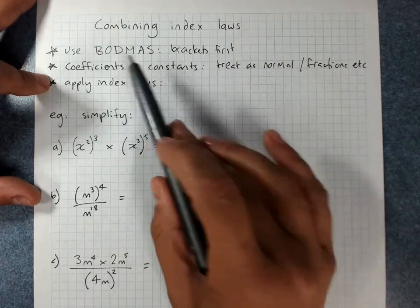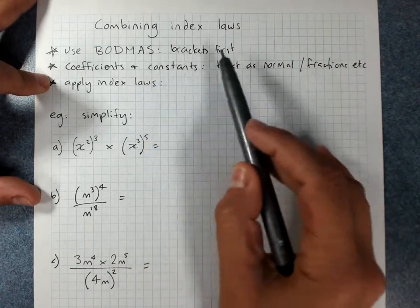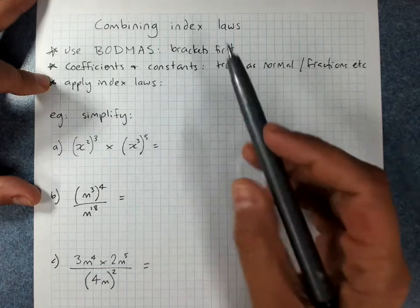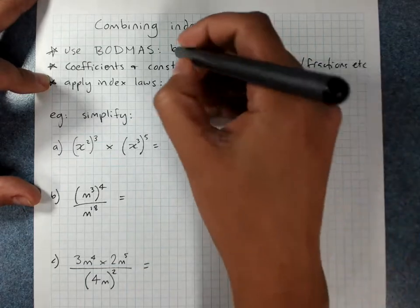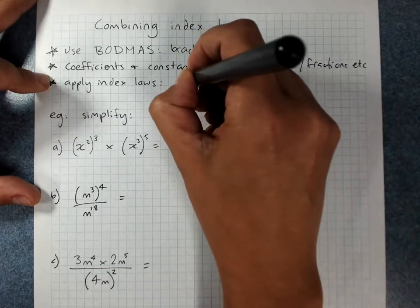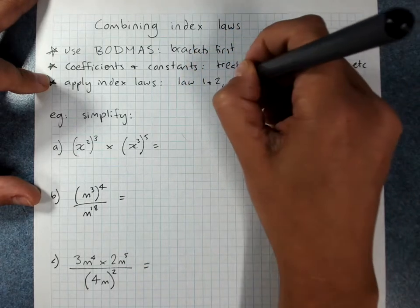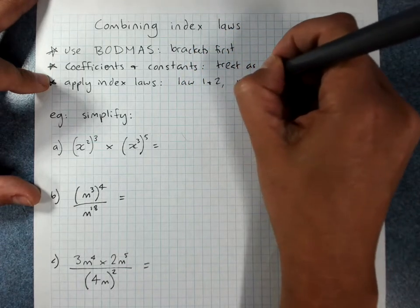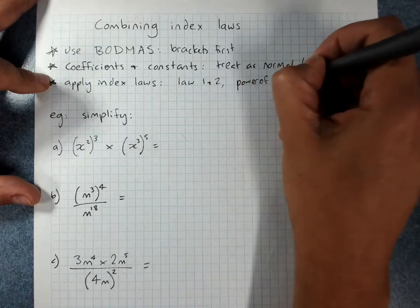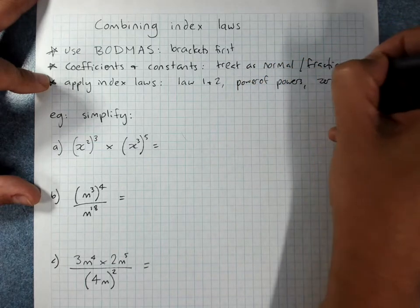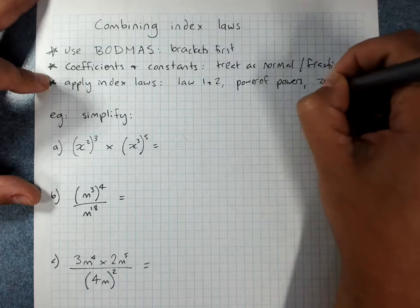So basically, order of operations, brackets first, then we'll have index laws like law 1 and 2. So for multiplying and dividing, power of powers, 0 index, and negative indices.